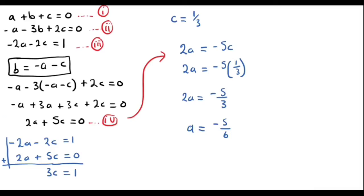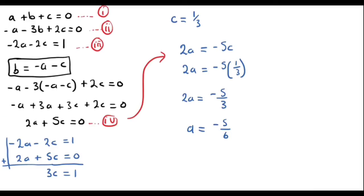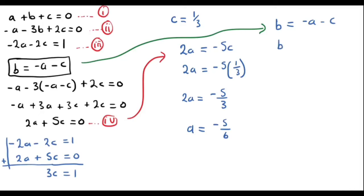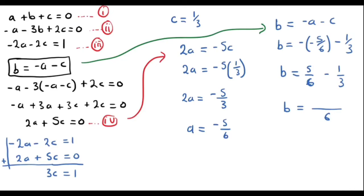Now let's find B using the expression B = -A - C. Substituting A = -5/6 and C = 1/3: B = -(-5/6) - (1/3) = 5/6 - 2/6 = 3/6, so B = 1/2.